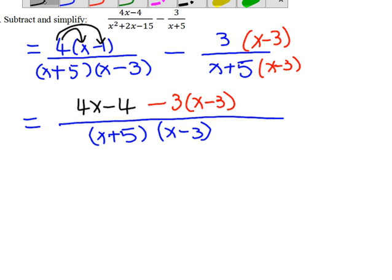So now, you can distribute negative 3 into x and into negative 3. So negative 3 times x, negative 3 times negative 3. So negative 3 times negative 3, that's a positive 9.